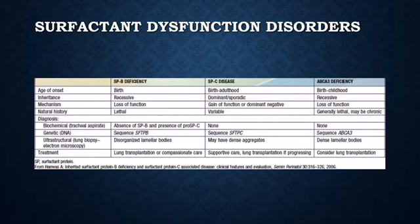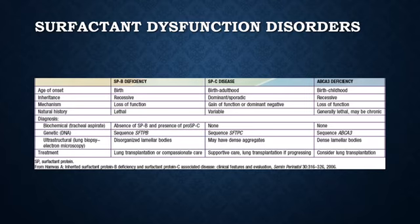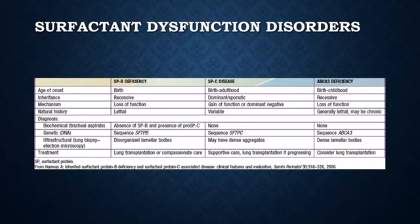Surfactants play a role in preventing the collapse of alveolar walls, thereby preventing respiratory distress especially in the newborn. Surfactant dysfunction disorders occur when there is a decrease in the production of surfactants due to genetic causes. Surfactant protein B is the least commonly mutated gene and is associated with an autosomal recessive form. Surfactant protein C is the second most commonly mutated gene and is autosomal dominant. ATP-binding cassette protein member 3 (ABCA3) is the most frequently mutated gene in surfactant dysfunction disorders; it is autosomal recessive and usually presents in the first few months of life with rapidly progressive respiratory failure followed by death.